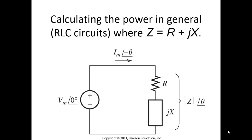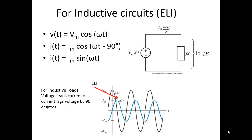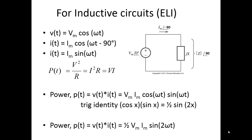If we continue on this path of determining the power — and we're moving towards a general impedance, not just a resistive impedance — we want to look at inductive circuits. With a source where our angle is zero and solving for the current, we get the current has a phase shift of 90 degrees. We can see that the voltage leads the current by 90 degrees for inductive circuits. The equation for power gives us the peak voltage times the peak current times cosine of omega T times sine of omega T. Using the identity cosine times sine equals one-half sine of 2x, the final equation for power is one-half times peak voltage times peak current times sine of 2 omega T.